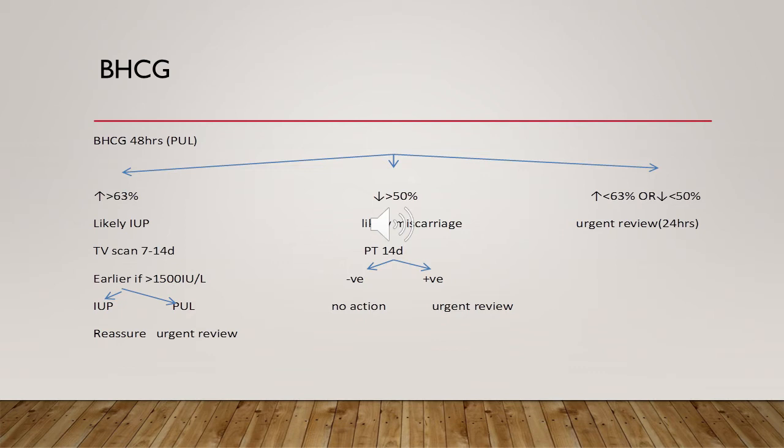If beta-hCG drops by more than 50 percent, it is likely a miscarriage. The patient should do a pregnancy test in 14 days; if negative, no action is needed. If still positive, urgent review is required. A problem arises if the beta-hCG increases but less than 63 percent, or decreases but less than 50 percent — in this case urgent review is required.